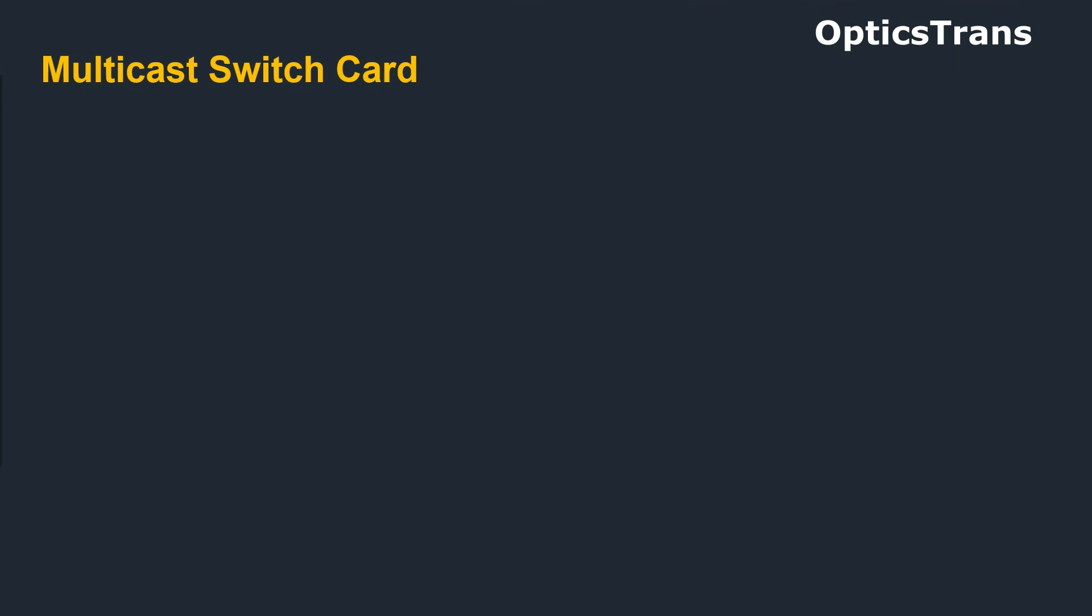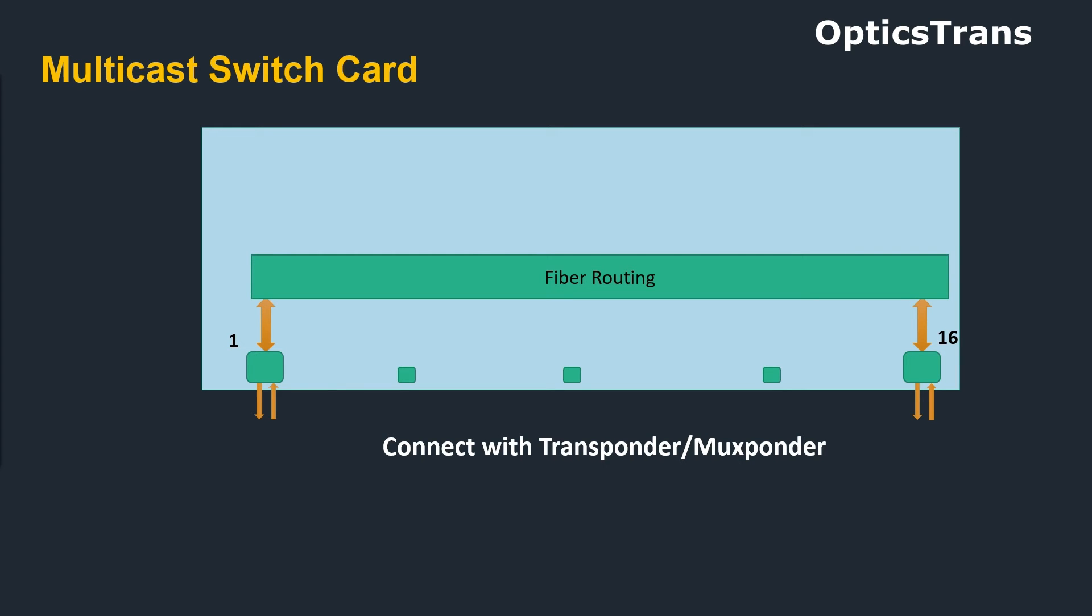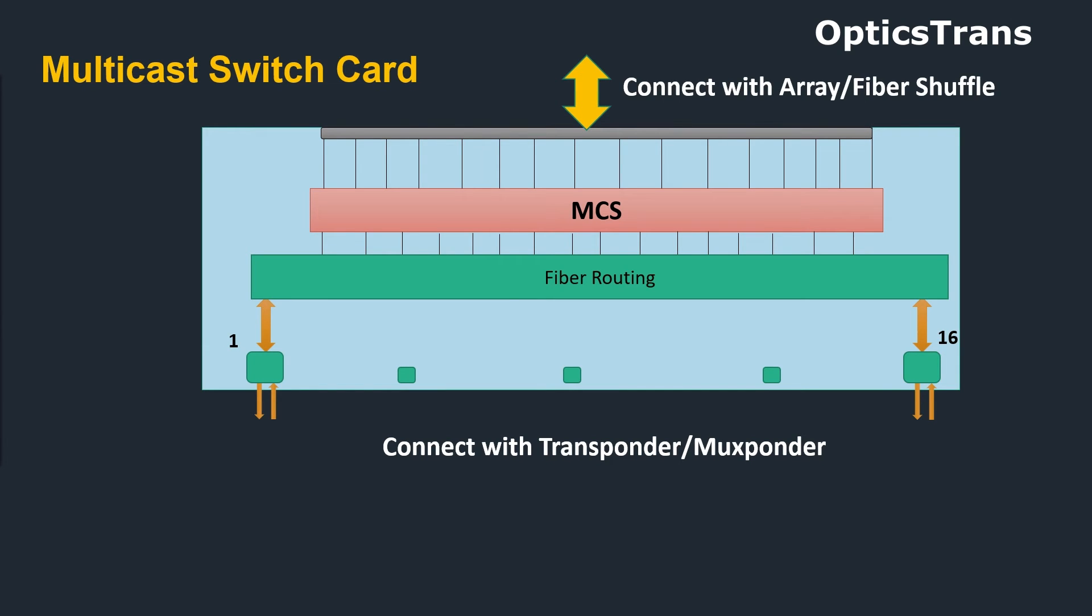The next card is multicast switch card, MCS. This card having 16 ports to connect with transponder or muxponder to add or drop the signal. Inside this card having fiber routing, and then MCS to direct the signal to eight degrees. Other side of this card connects with array card or fiber shuffle card with MPO cable.